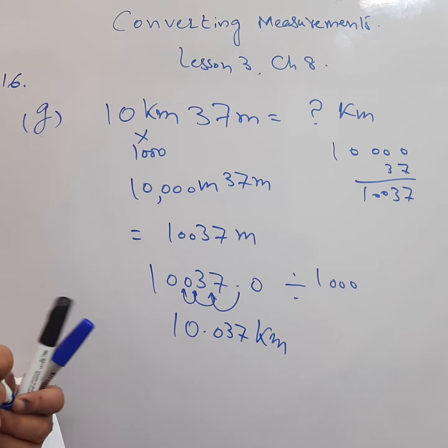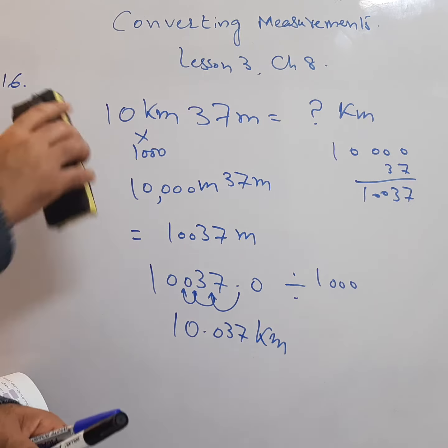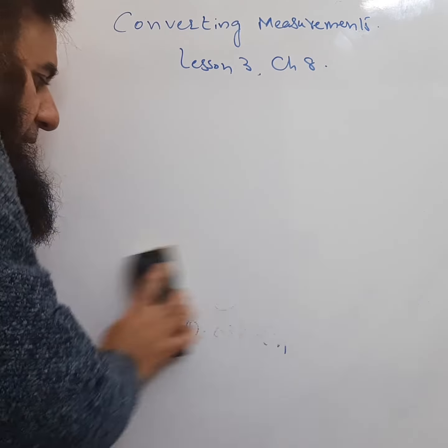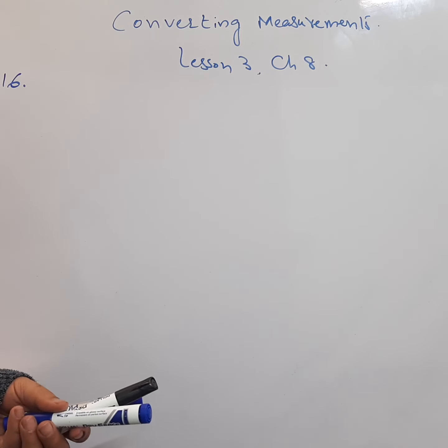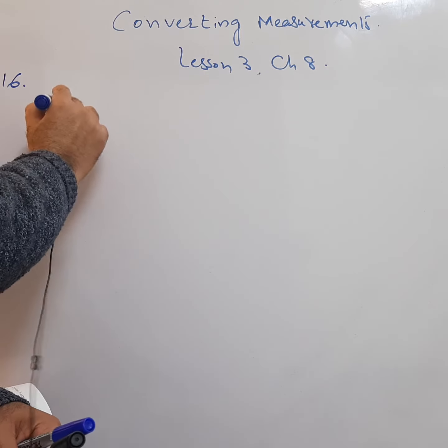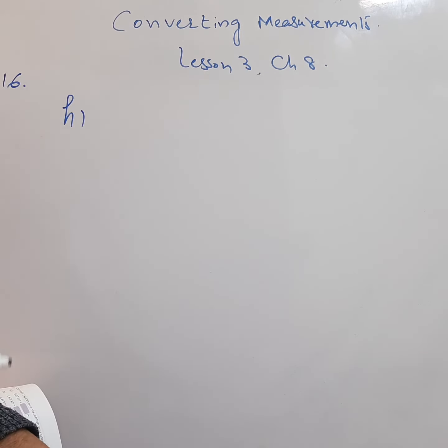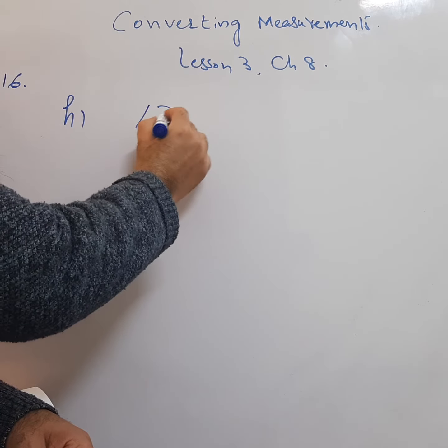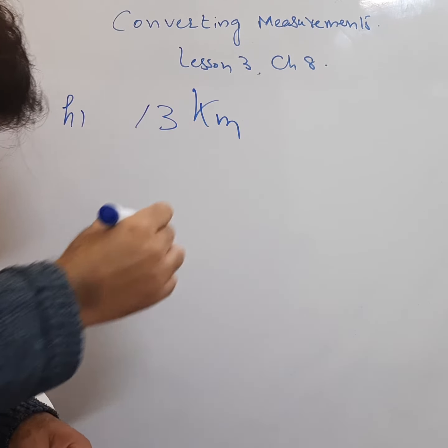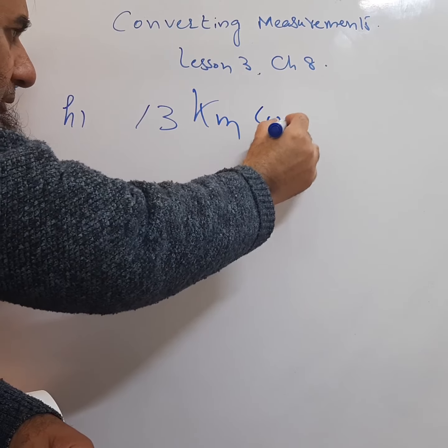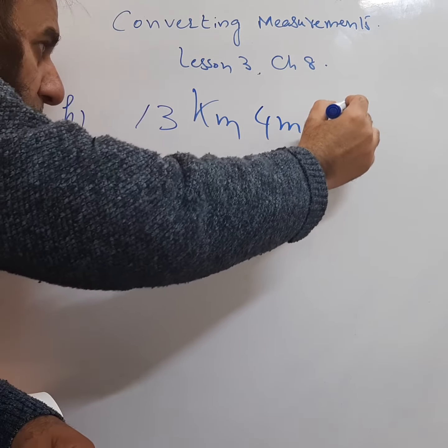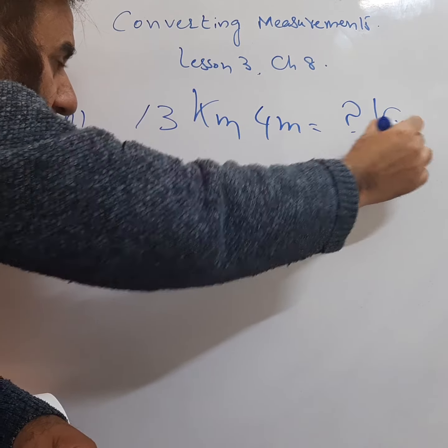This is the answer for part G. Now we will be doing part H. 13 kilometers 4 meters equals how many kilometers? First, convert it whole into meters.